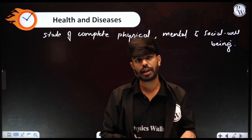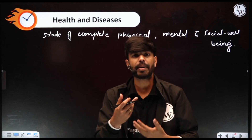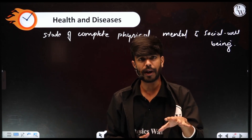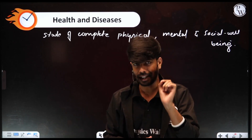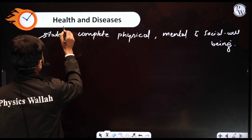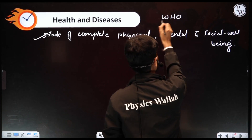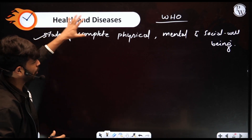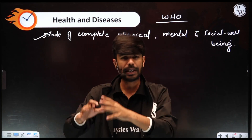Socially means how we behave in the classroom, with friends, neighbors, and in the society. If someone is moody, depressed, or not sharing — that is also not considered complete well-being. If we are not complete in any one of those areas, that doesn't mean we are healthy. This definition of health was given by WHO — the World Health Organization — as a state of complete physical, mental, and social well-being of a person.